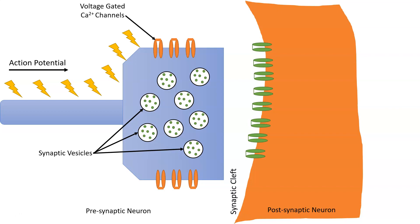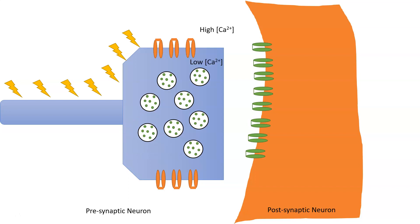It turns out, at the synaptic terminal, there is another type of voltage-gated ion channel that is permeable to calcium. We know that there is a higher concentration of calcium outside the cell compared to the inside of the cell. When the action potential arrives at the terminal, the depolarization of the membrane causes these calcium channels to open.